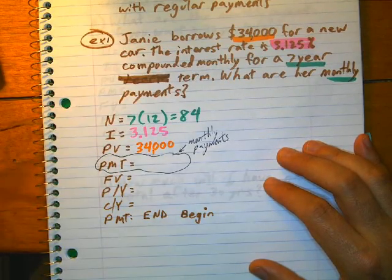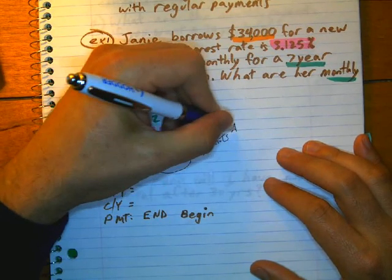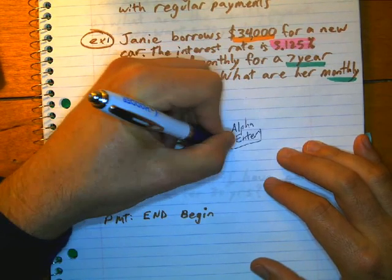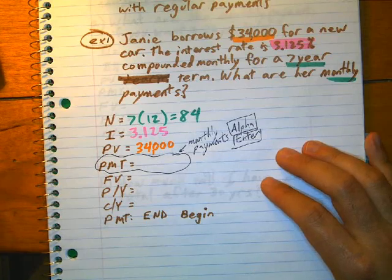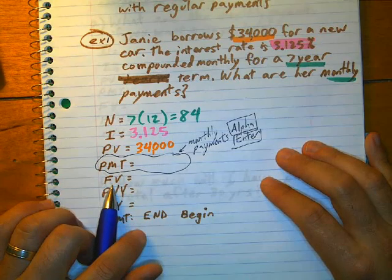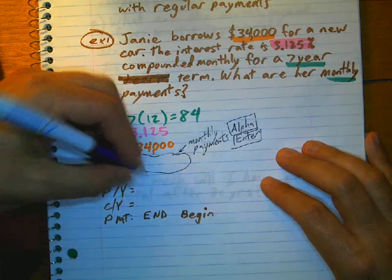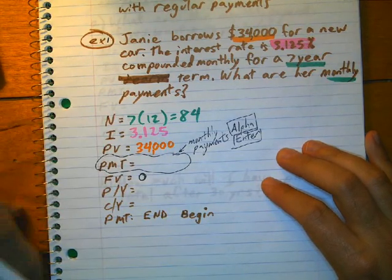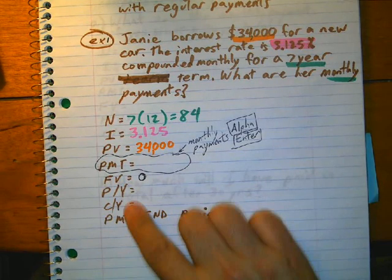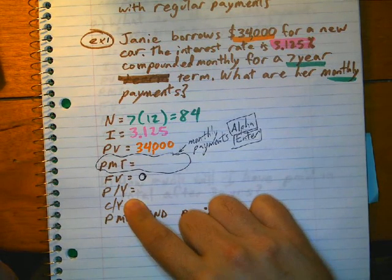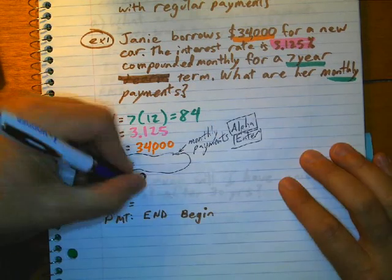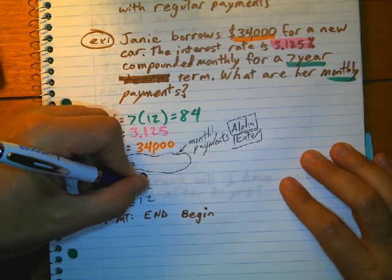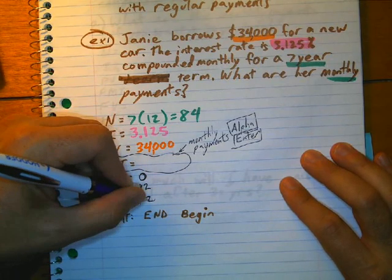We're going to hit alpha, enter to get that answer. Future value is going to be zero. After you've made all of your payments for seven years, you're done with payments. You're going to be paying monthly, and it's compounded monthly, so it's going to be 12 and 12. Most of the time, these values here are 12, unless there's something unusual happening.